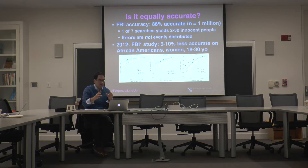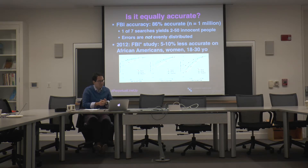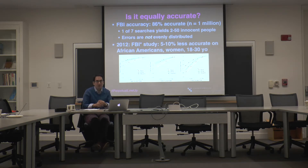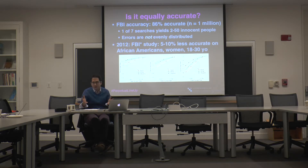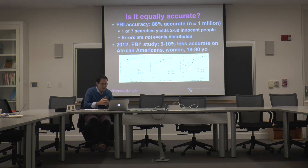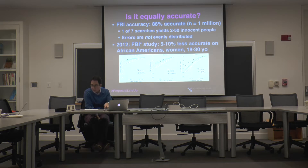One out of seven times, the correct face was not returned in the answer set. I want to point out that the sample set was one million faces. What happens to error rates when your database grows? Error rates go up — you have more doppelgangers, more people who resemble each other. And critically, errors are not evenly distributed in the population. There is far too little research on bias in facial recognition systems.